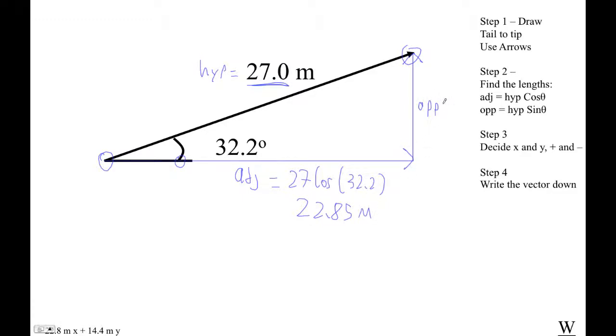The opposite side here, opposite side is 27 sin of 32.2. Okay, so 27 sin 32.2 is 14.39.